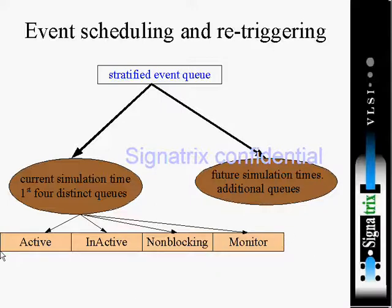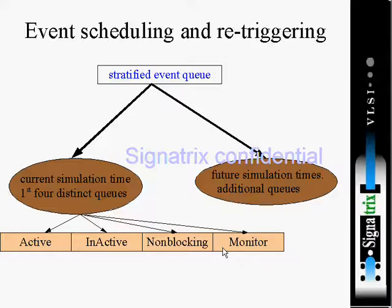If a statement has no delay, it will execute in the current time unit. There are four regions in our simulator: the active region, the inactive region, the non-blocking region, and the monitor region. These are the four regions available in the Verilog event queue.